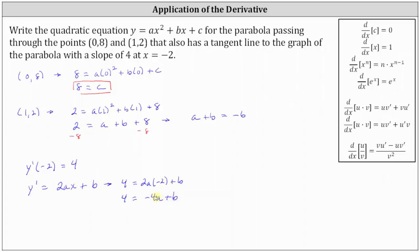Now we can use this equation and the equation a plus b equals negative 6 and solve as a system of equations. We write negative 4a plus b equals 4 below the equation a plus b equals negative 6. We can use either elimination or substitution — let's use the method of elimination.